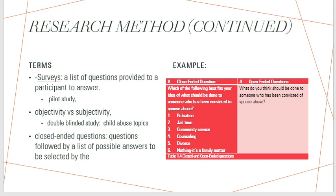Some surveys have closed-ended questions and some have open-ended questions. Open-ended questions cannot exhaust all options — for example, 'What is your name?' or 'What is your address?' cannot be listed as A, B, C, D options for every individual. Closed-ended questions provide options but must be exhaustive, meaning there must be an option for every participant. The last option could be 'other,' with a blank for individuals to write in an option not listed.